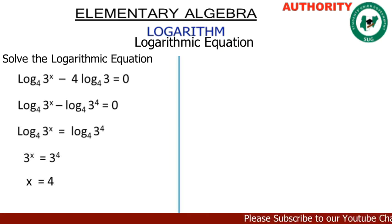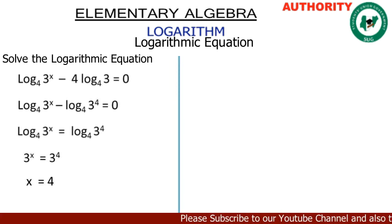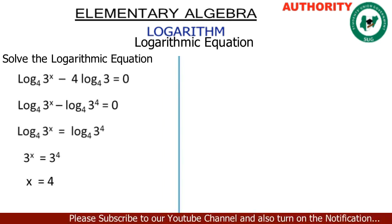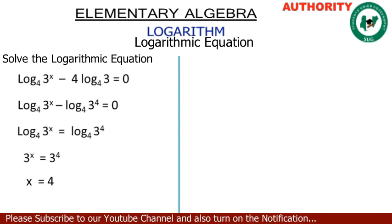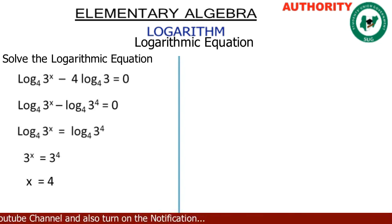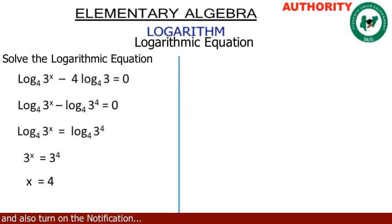Therefore, the logarithmic equation log of 3 raised to power x, base 4, minus 4 log of 3 base 4, equals 0, gives us x equals 4. Thank you very much for watching. Please don't forget to subscribe and turn on notifications so you'll be notified whenever we upload a new video.